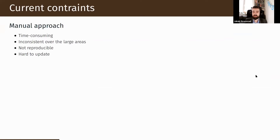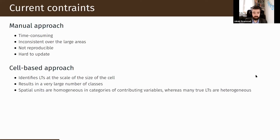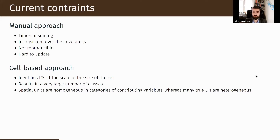The core problem with manual delineation is that it is time-consuming, involves many people, and can produce results that are inconsistent over time and over large areas, and are not reproducible or easy to update. The cell-based approach has its own limitations: when working at the scale of one cell, we can only have homogeneous land pattern types, meaning each cell can only have one value per layer. This leads to a very large number of possible output classes.